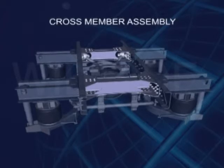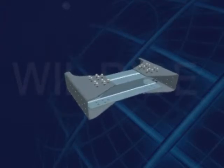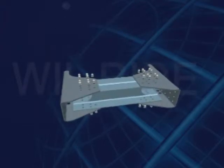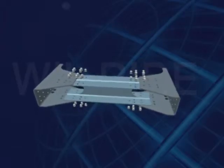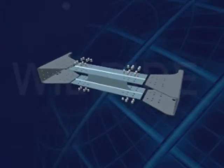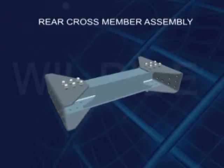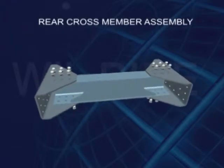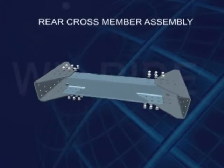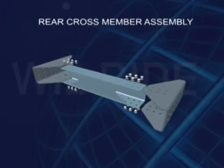Cross member assembly. Front cross member assembly may consist of cross member gusset LH, cross member gusset RH, cross member beam, snap head rivets. Rear cross member assembly may consist of cross member gusset LH, cross member gusset RH, cross member beam, snap head rivets.